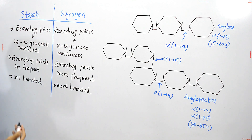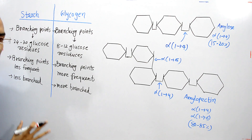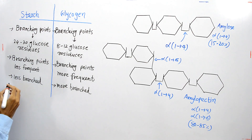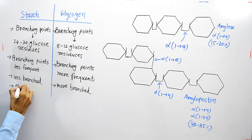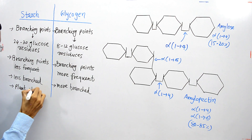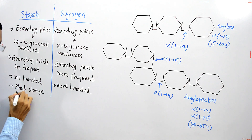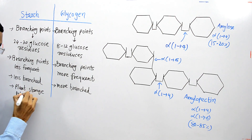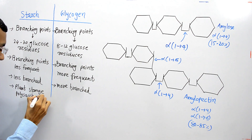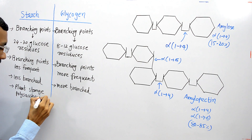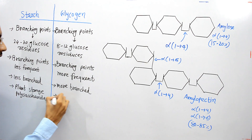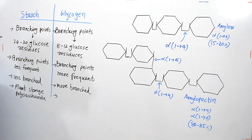Starch is a plant storage homopolysaccharide, while glycogen is an animal storage polysaccharide.